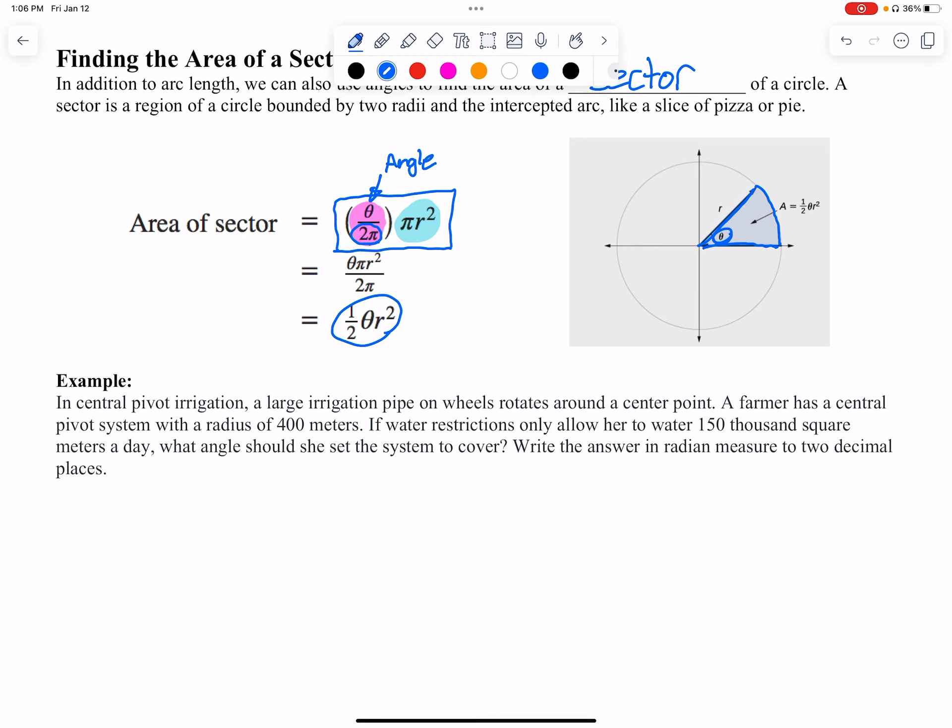We actually get the area of a sector in an actual formula: ½θr². If you can memorize that, that'd be great. I like this because it makes sense to me—πr² is the area of the circle, and then what's highlighted in pink is that proportion, that portion of that circle.